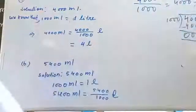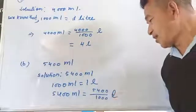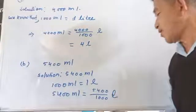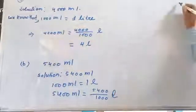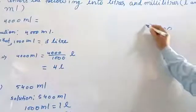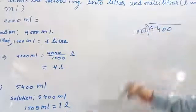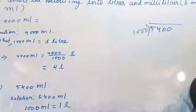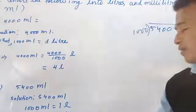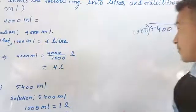Let's see what 5400 by 1000 gives us. 5400 divided by 1000 means this division is happening. The bottom number will divide the top number.